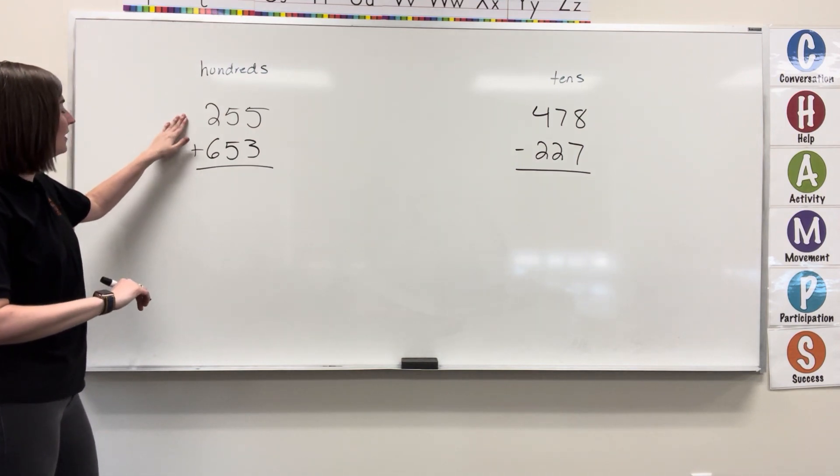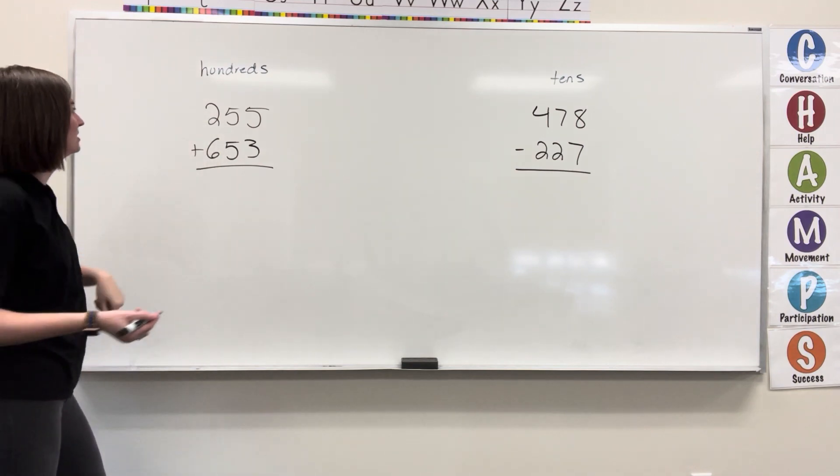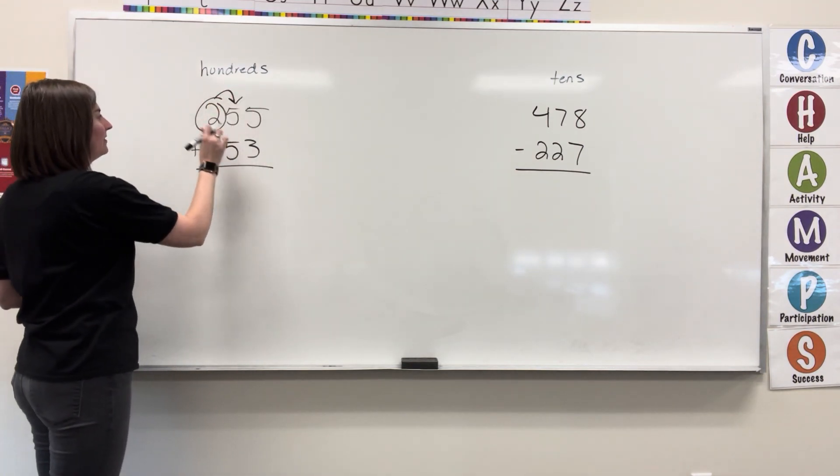So, 255 plus 653. First, we round both numbers to the hundreds. Circle the place value.